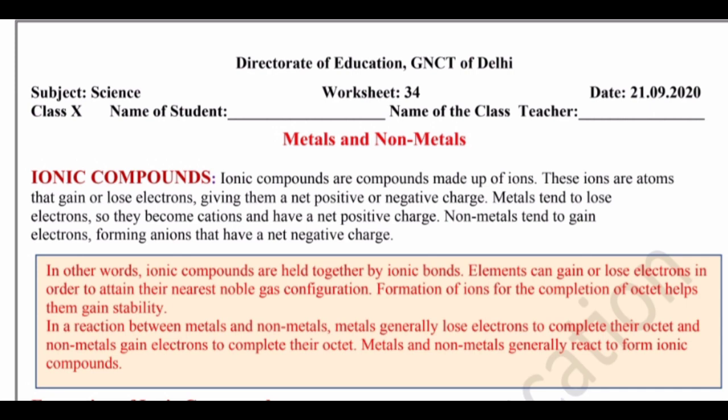In other words, ionic compounds are held together by ionic bonds. Elements can gain or lose electrons in order to attain their nearest noble gas configuration. Formation of ions for the completion of the octet helps them gain stability. In a reaction between metals and non-metals, metals generally lose electrons to complete their octet and non-metals gain electrons to complete their octet.